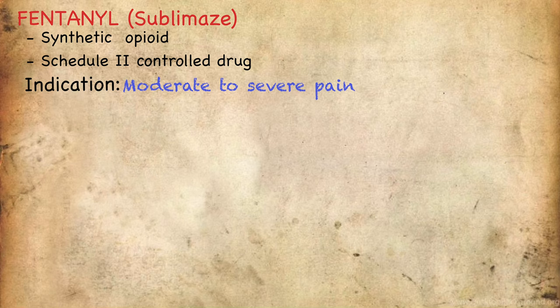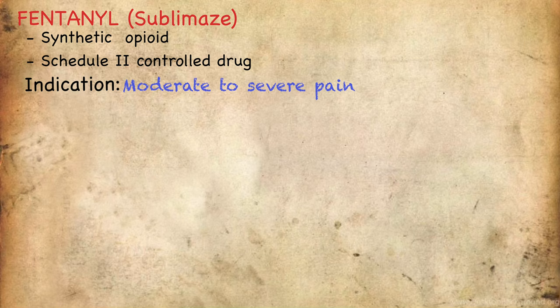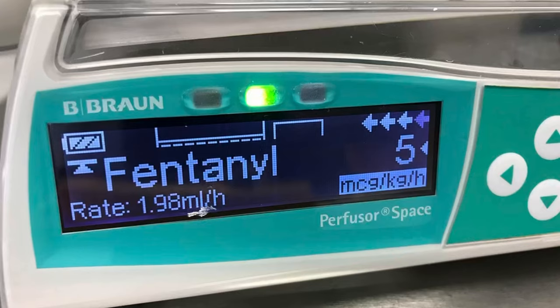Fentanyl has surpassed morphine as the most popularly used opioid analgesic in intensive care units. It has several advantages over morphine, including a faster onset of action. This is due to the fact that fentanyl is 600 times more lipid soluble than morphine — in other words, it has a high capability of dissolving in fats, oils, or fatty tissues. Because of this high affinity to adipose tissue, it has a low tendency to remain in the vascular compartment and therefore a low tendency to accumulate in the body.